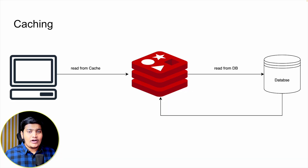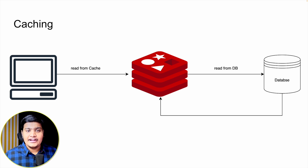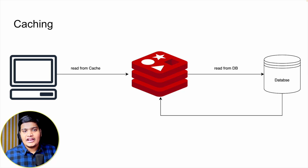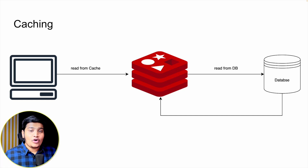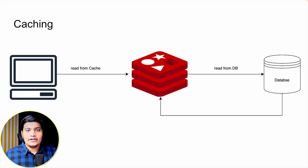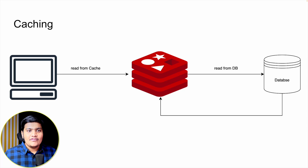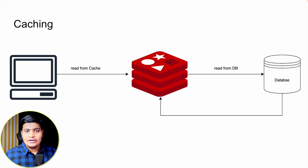The first thing we can do is add a caching mechanism. For example, when fetching data, a request comes from the client to the server, and the server queries the database to fetch the data. If multiple clients want the same data, we are again and again querying the database. Instead, for a particular period of time based on the application's needs, we can have that data cached somewhere.